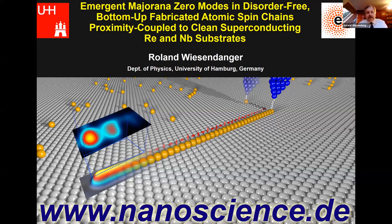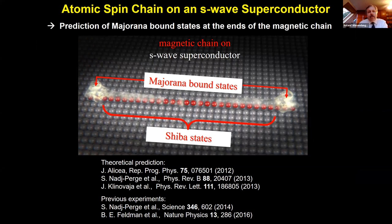The STM technique can be used to probe the spin texture of the chains, as well as the emergent electronic states, especially end states, but also states within the chain to probe the bulk-boundary correspondence. Let me start by introducing this platform. It has been predicted that if you bring a spin chain — a chain of single magnetic impurities — in contact with an S-wave superconductor,